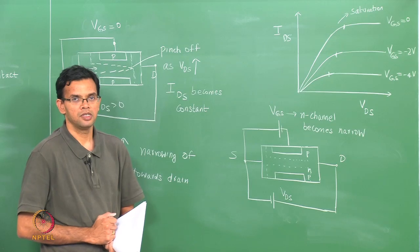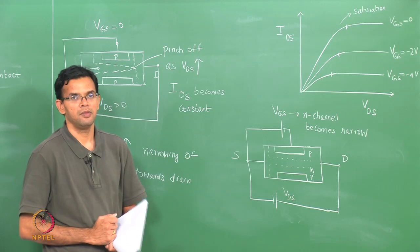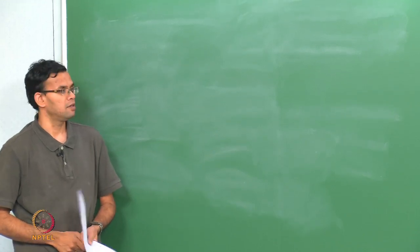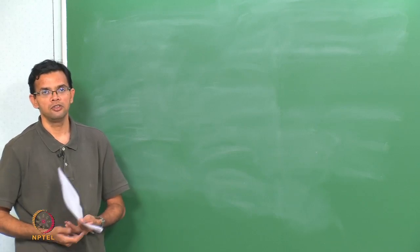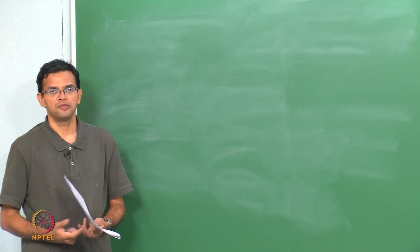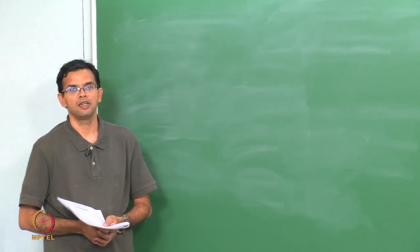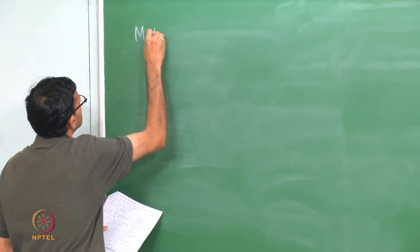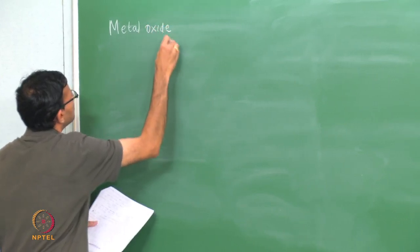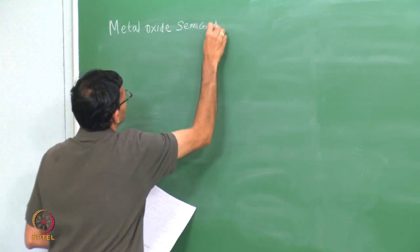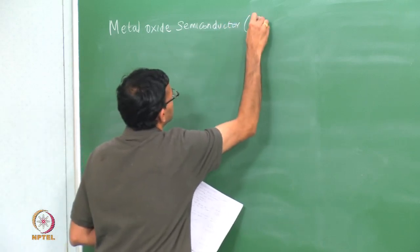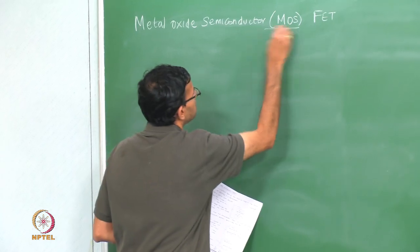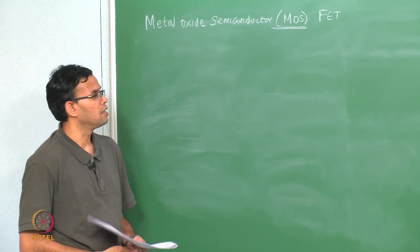The next device we will look at is the MOSFET — the metal oxide semiconductor field effect transistor — which is commonly used in the current micro-fabrication industry. Before understanding MOSFETs we need to look at the metal-oxide-semiconductor junction to see how a channel is formed in that case.